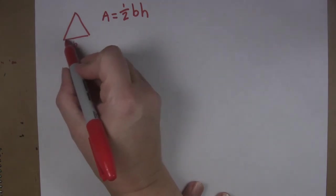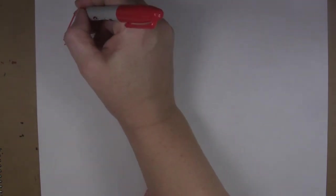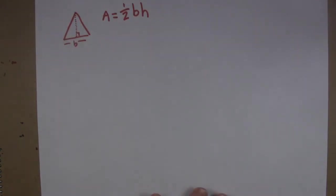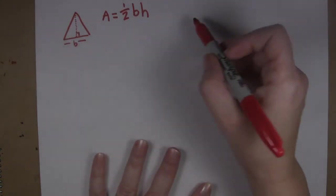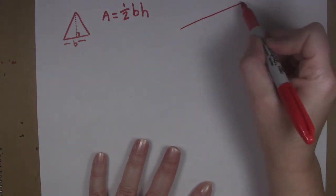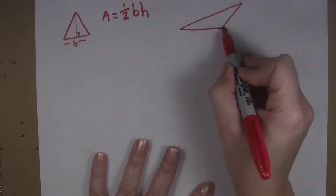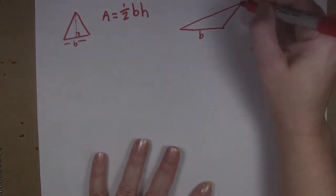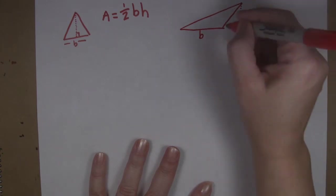And so this would be your base and your height is a measure from the tippy top down to the base. Remember it has to be a perpendicular line. If you have a funky triangle that looks like this, this is your base and then you measure a perpendicular from the height and that becomes your height.